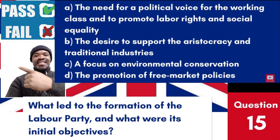Question 15: What led to the formation of the Labour Party and what were its initial objectives? a. The need for a political voice for the working class and to promote labour rights and social equality. b. The desire to support the aristocracy and traditional industries. c. A focus on environmental conservation. d. The promotion of free market policies. Answer: a. The Labour Party was formed to represent the interests of the working class, with initial objectives focused on labour rights, social reforms and equality.